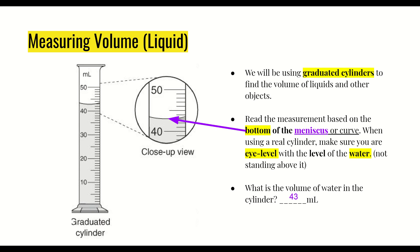Now we're looking at measuring the volume of a liquid. Add a subheader in your notes for 'measuring liquid volume.' We will be using graduated cylinders to find the volume of liquids and other objects. So under your subheader, note the tool we use: graduated cylinders.